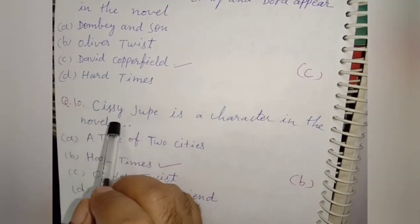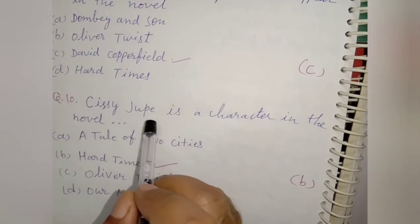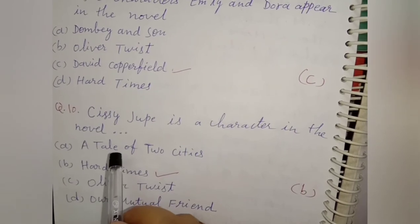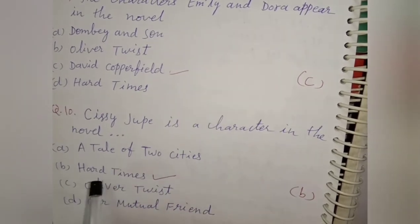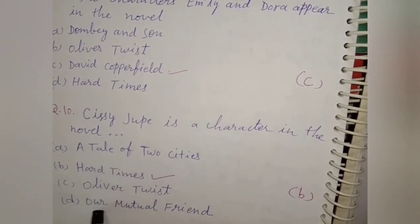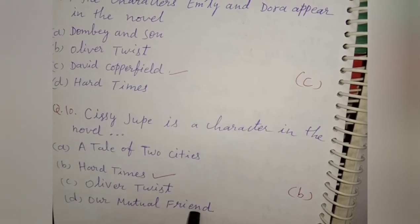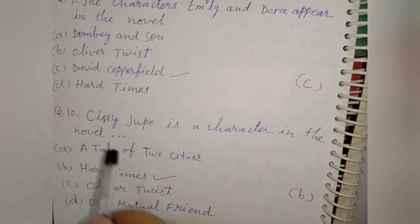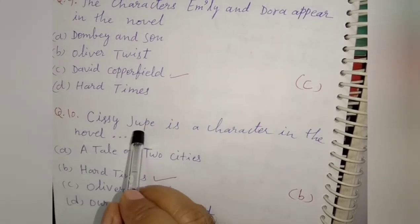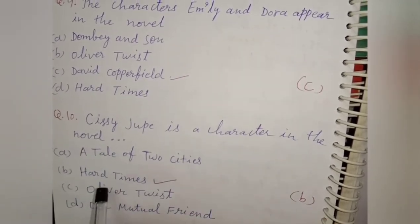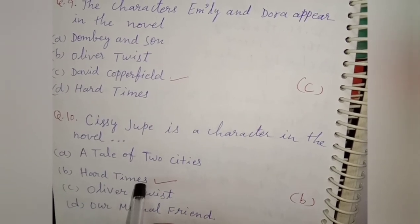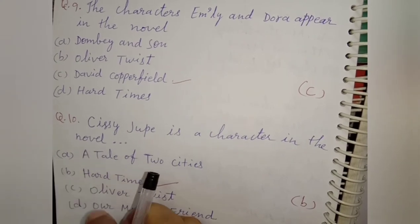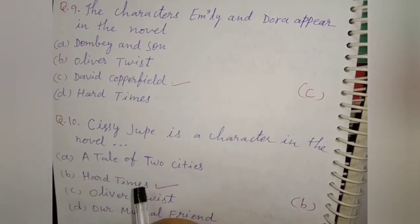Next question: C.C. Jupe is a character in which novel? The options are A Tale of Two Cities, Hard Times, Oliver Twist, and Our Mutual Friend. The right option is option B, Hard Times. C.C. Jupe is a character in the novel Hard Times. I hope you will get some knowledge from these objective type questions based on Charles Dickens.